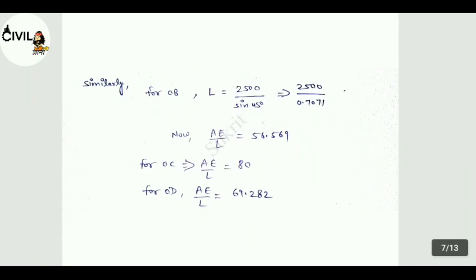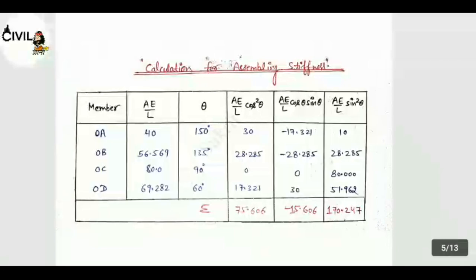Now value is equal to 69.282. Now for OA 40, OB 56.569, OC is equal to 80, and OD is equal to 69.282. Theta you can write down: 150 degree, 135 degree, 90 degree and 60 degree.